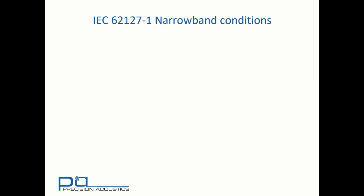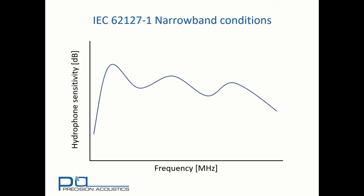It's also important to note that IEC 62127 Part 1 contains another means of converting voltage to pressure, but only when we are subject to narrowband conditions. Consider a hydrophone sensitivity function as shown.